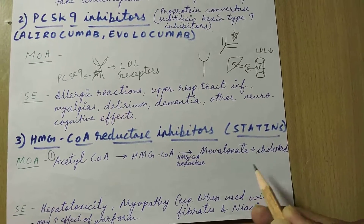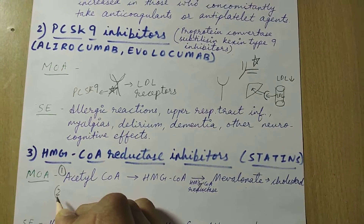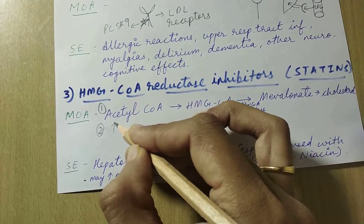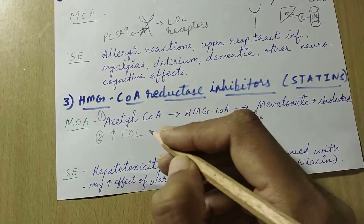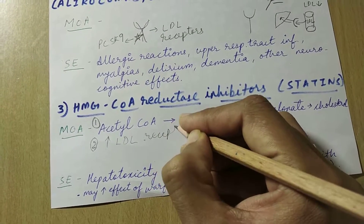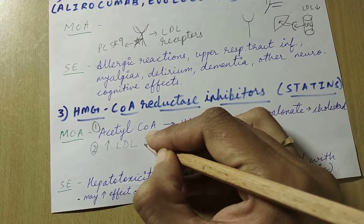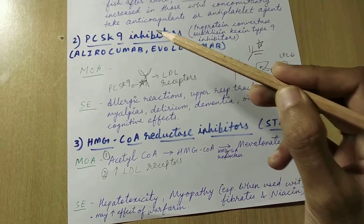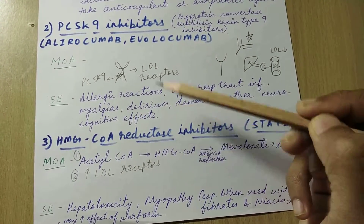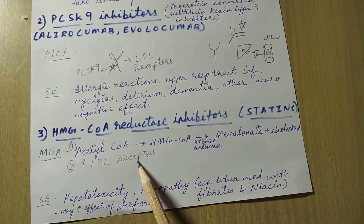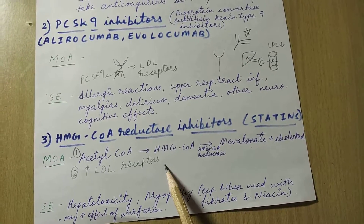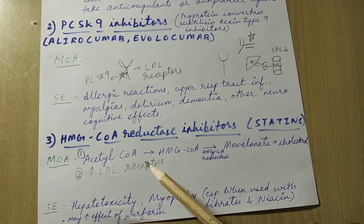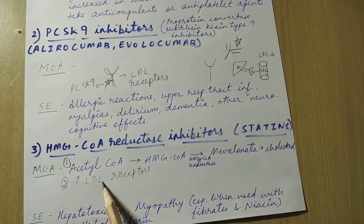To compensate for reduced cholesterol synthesis, the liver tries to make more LDL receptors on its surface. This is where the mechanisms of PCSK9 inhibitors and statins are slightly similar: with statins, there is an increase in LDL receptors as a compensatory mechanism, while with PCSK9 inhibitors, there is less destruction of LDL receptors. At the end, both lead to an increase in LDL receptors on the surface of the liver — this is very important for the exam.